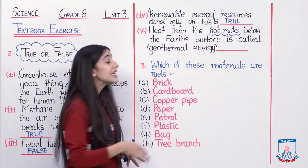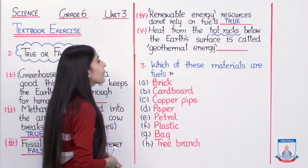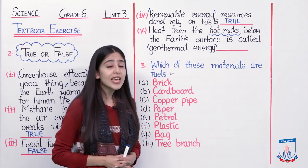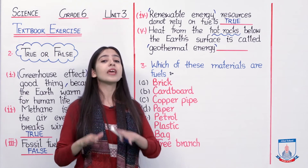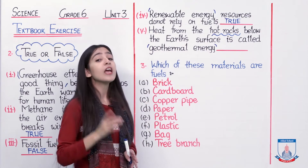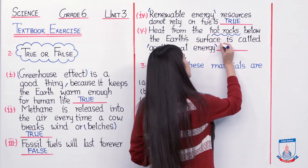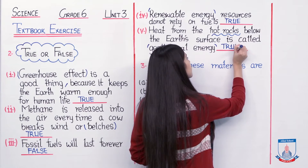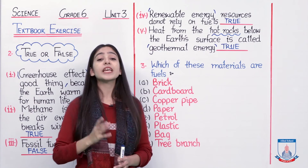Thermal means heat and geo means earth's surface. Geothermal energy is energy that we get from hot rocks which are in the crust of the earth. So this definition matches the statement exactly, meaning this statement is absolutely correct. You will also write the answer as: True. I hope you have noted all answers in your textbook.